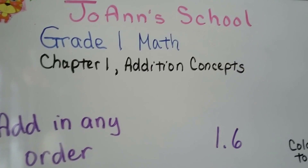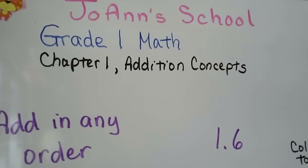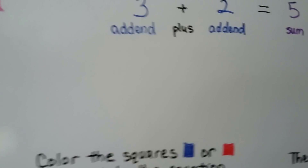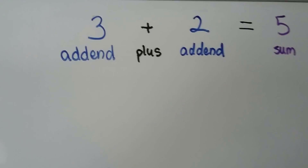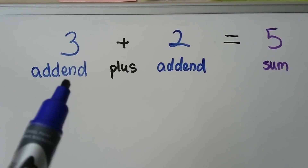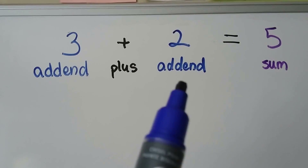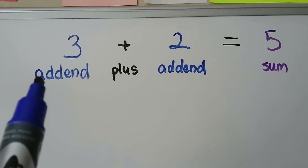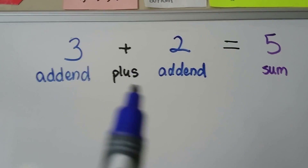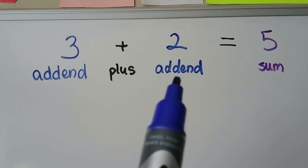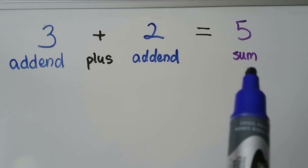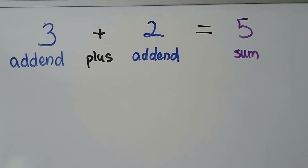Add in any order. Lesson 1.6. When we look at an addition sentence, an addition equation, the numbers that we add together are called the addends. We have our plus sign, we have another addend, is equal to, and our sum, which is our answer.